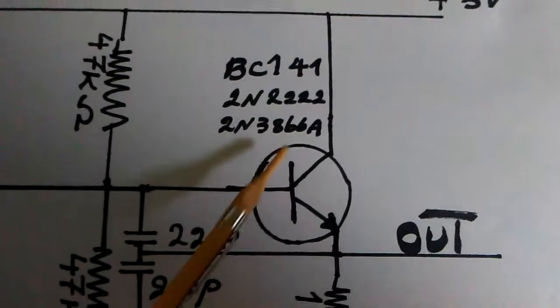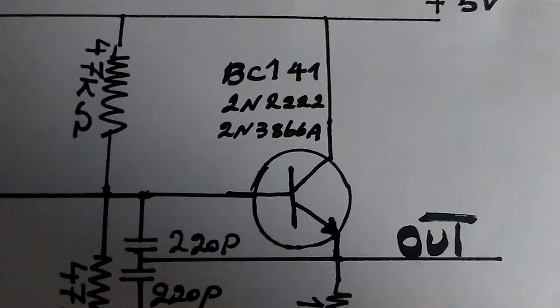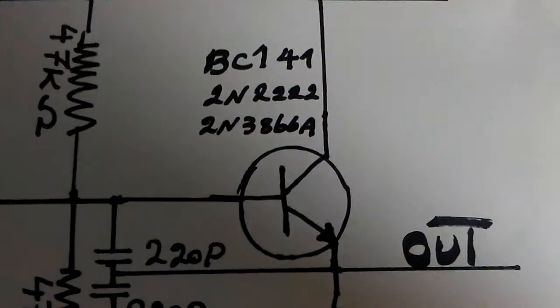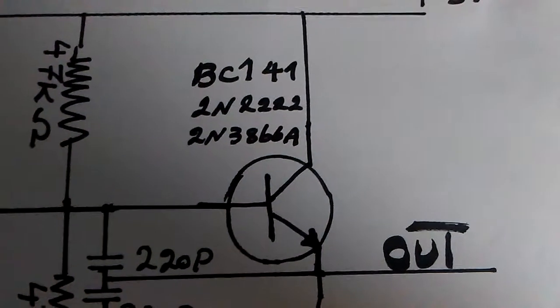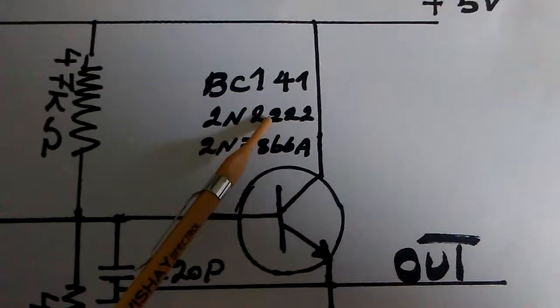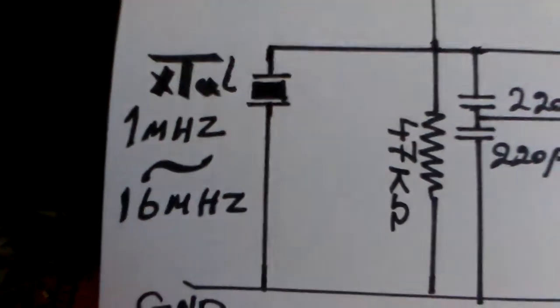I use 2N3866. This transistor is a little bit hard to find, but if you use this, the frequency goes up to 20 megahertz. But with the regular multi-purpose transistor 2N2222, the frequency goes maximum to 16 megahertz.